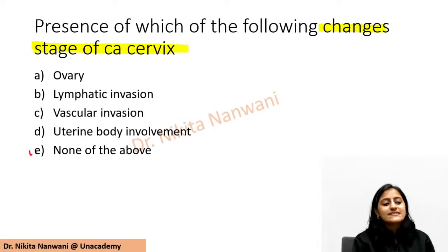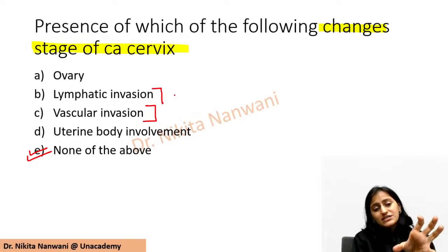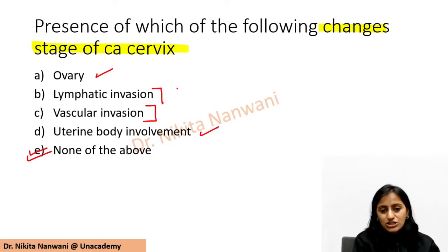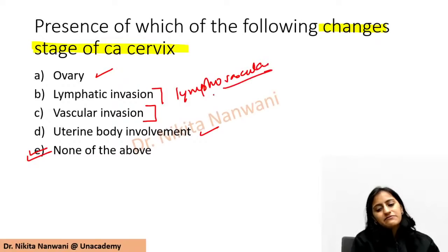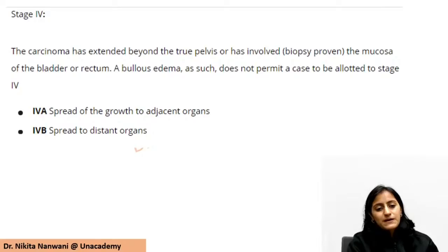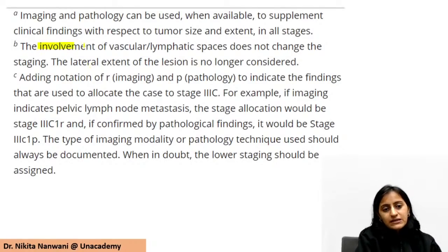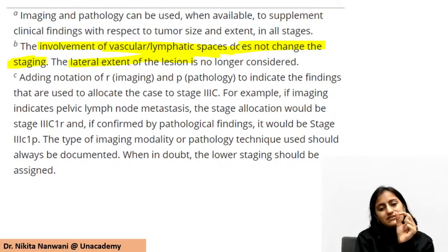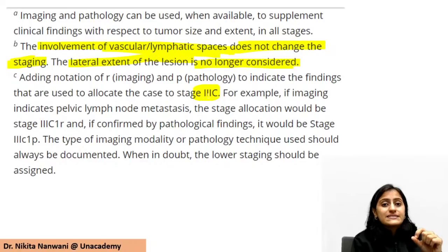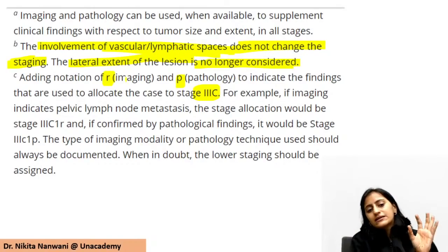The answer is none of the above. The question mentions lymphatic invasion and vascular invasion - not lymph node involvement. Ovary involvement does not change the staging. Uterine body involvement does not change the staging. Even lymphovascular space invasion does not change the staging in ca cervix. Also, the lateral extent (width) of the lesion is no longer considered. For retroperitoneal lymph nodes, the 'r' (radiologic) and 'p' (pathologic) suffixes are used to annotate stage 3C - indicating how the nodes were detected.